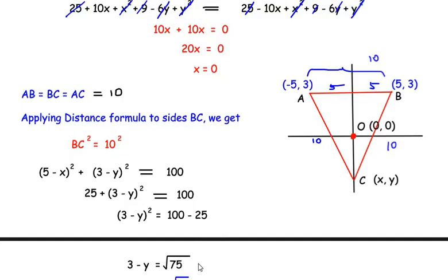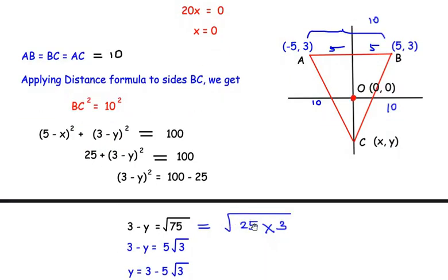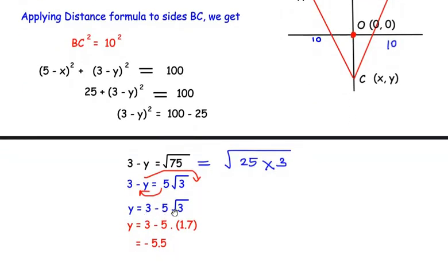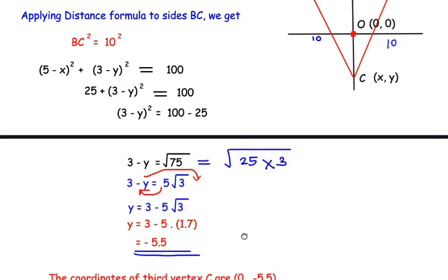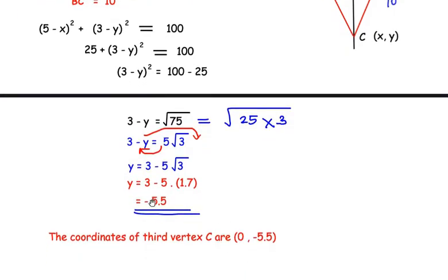Taking the square root: 3 - y = √75. Since √75 = √(25 × 3) = 5√3, we get 3 - y = 5√3. Rearranging, y = 3 - 5√3. Using √3 = 1.7, we calculate 5 × 1.7 = 8.5, so y = 3 - 8.5 = -5.5. The coordinates of the third vertex C are (0, -5.5).